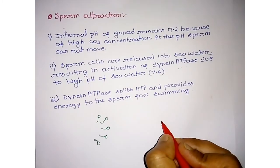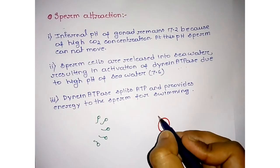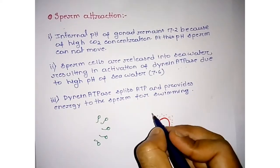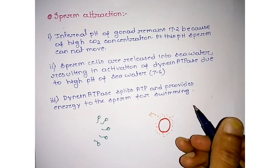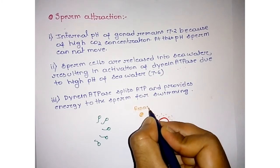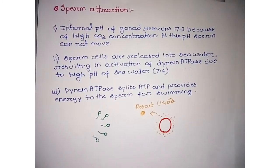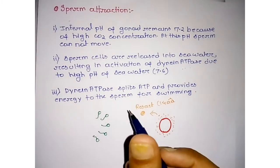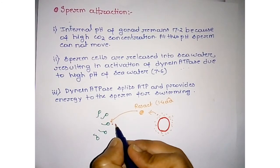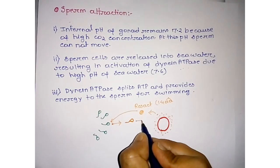But until egg jelly - suppose this portion is jelly - egg jelly releases a special type of small peptide. The name of this peptide is resact, consisting of 14 amino acid residues. Now this resact binds with sperm, and sperm now shows a particular directional movement towards the egg.